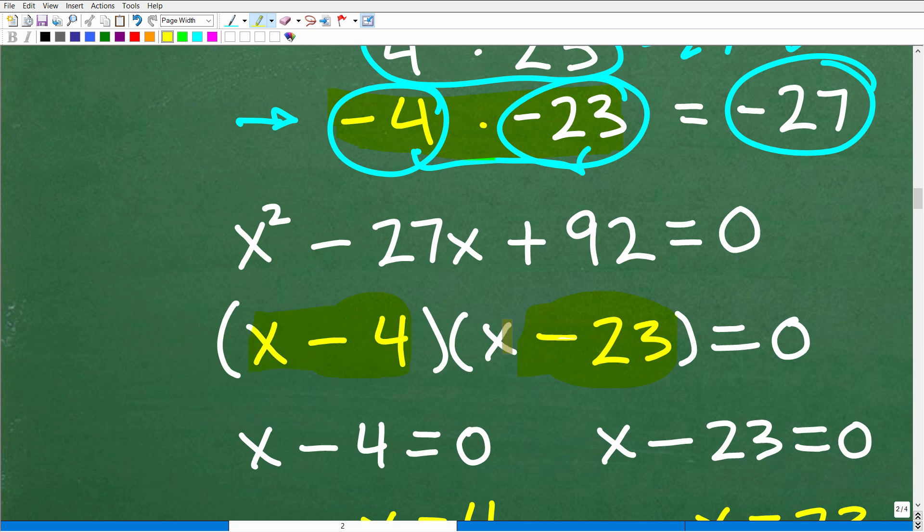So when I go to factor this right here, here's my quadratic trinomial. One of the factors is going to be negative four. Here's negative four. And the other is going to be negative 23 right here. Okay. See how I'm writing that. And like, it's so, so easy. So X minus four is one factor and X minus 23 is the other factor.